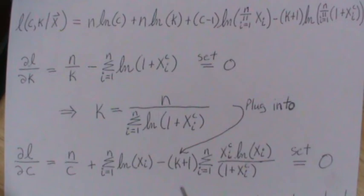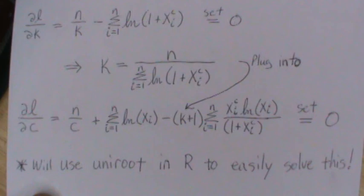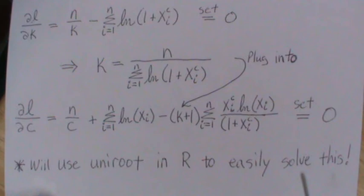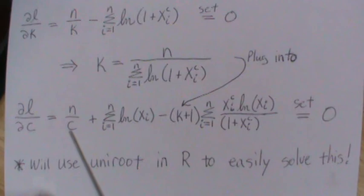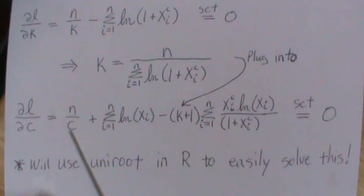Now there are many ways to solve this, but I think uniroot in R is so powerful and fast. We're going to plug this into uniroot in R and it solves it instantly for C that makes this 0. Then once we know the estimate for C, we can plug it in here and get an estimate for K. Those are the two maximum likelihood estimates. So now I want to illustrate this in R.